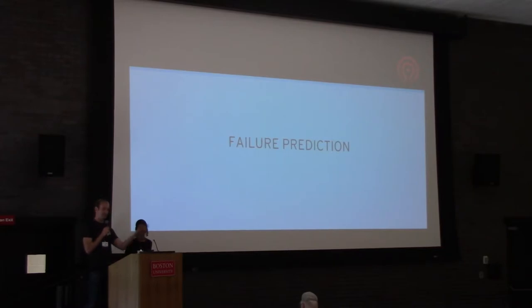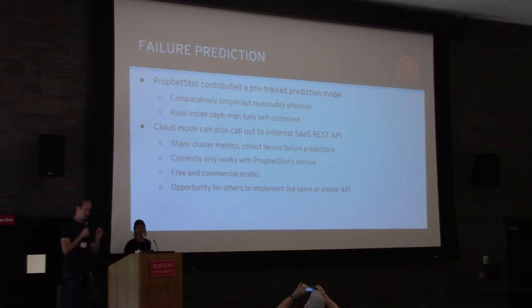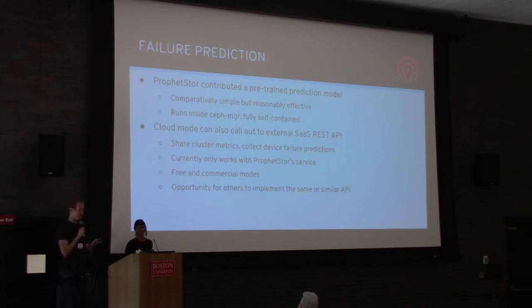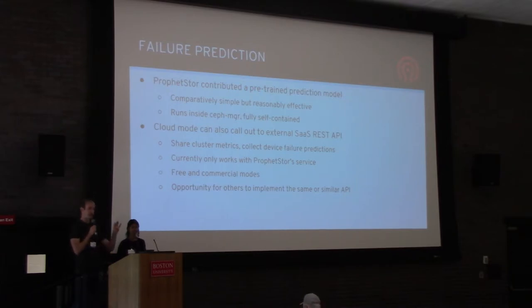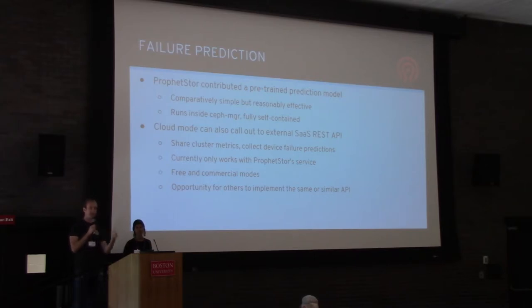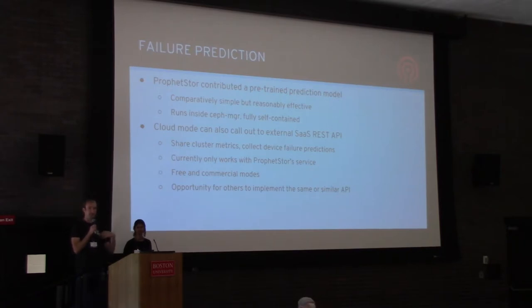That brings us to the second phase of the architecture — failure prediction. Today we have two approaches. ProfitStore contributed a pre-trained prediction model to the upstream open source project — it's sklearn library model files. It's a comparatively simple model, but it works. It runs inside the Ceph manager daemon, so you can have an out-of-the-box cluster analyzing metrics and doing predictions. There's also the ability to call out to an external SaaS API — either hosted in your data center or in the cloud — feed the metrics to that external service, and get a prediction result back. ProfitStore's goal is to have a free service you can use, or you can pay them for their very accurate predictions.